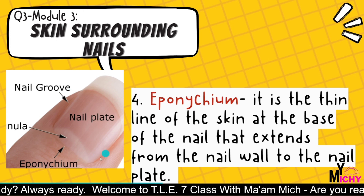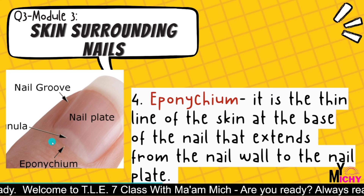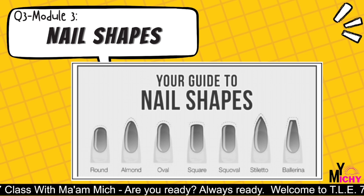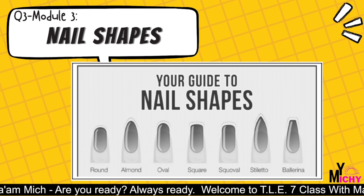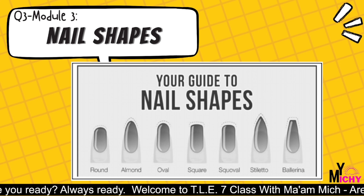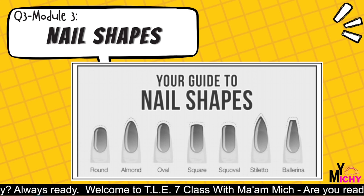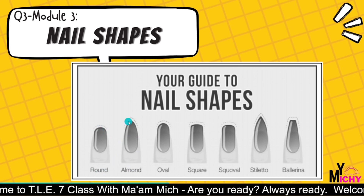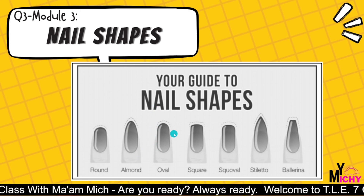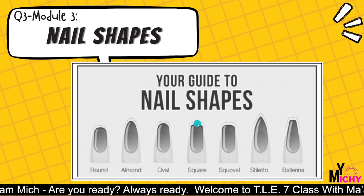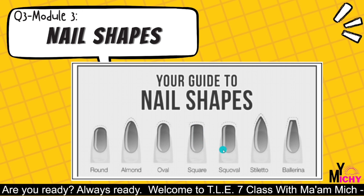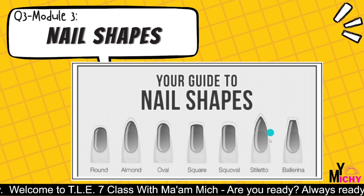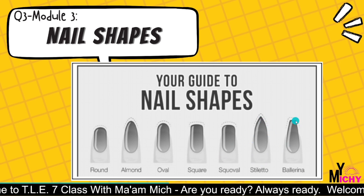Here's the guide to nail shapes. We have seven nail shapes: round, almond, oval, square, square plus oval, stiletto, and ballerina.